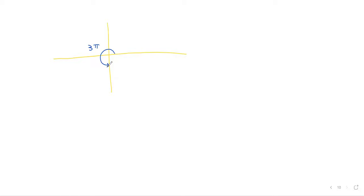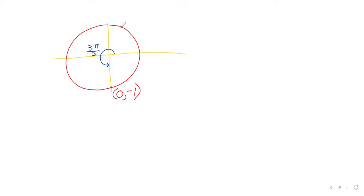The angle 3π/2 corresponds to the point (0, −1) on the unit circle. The cosine is 0 and the sine is −1, and you can find the other four trig functions as the appropriate fractions from those values.